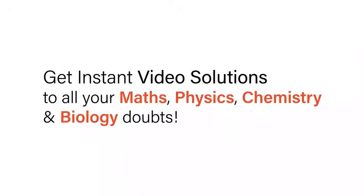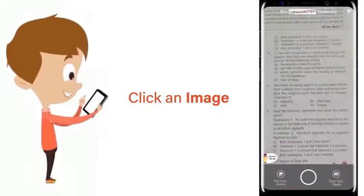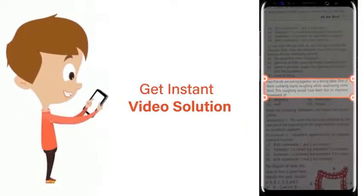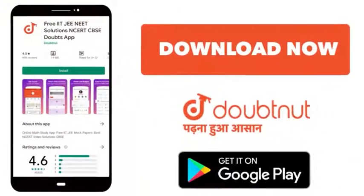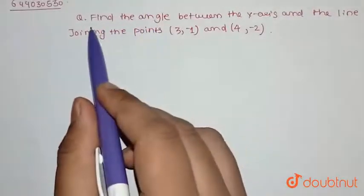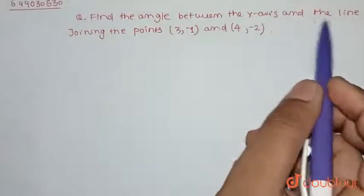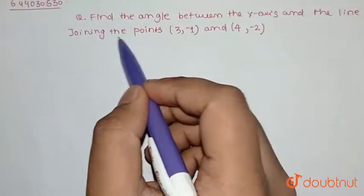With Doubtnet, get instant video solutions to all your maths, physics, chemistry, and biology doubts. Just click the image of the question, crop it, and get instant video solution. Download Doubtnet app today. Find angle between x-axis and line joining points (3, -1) and (4, -2).